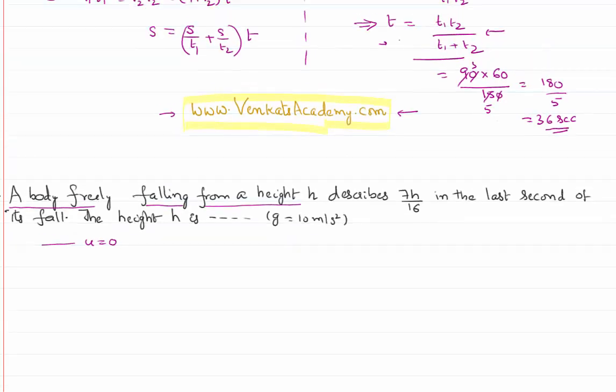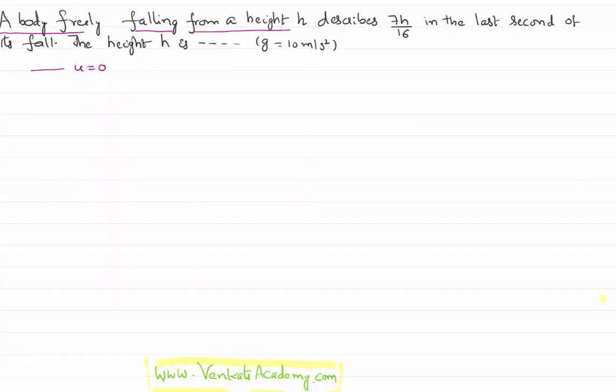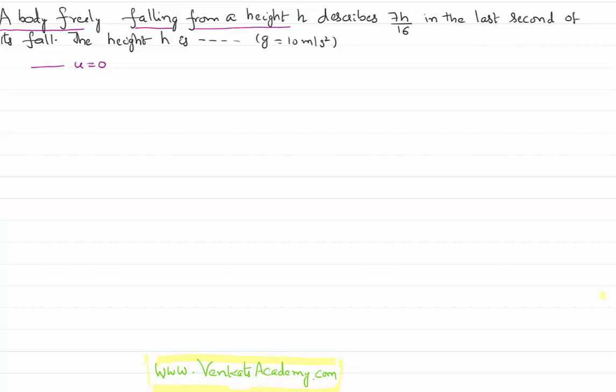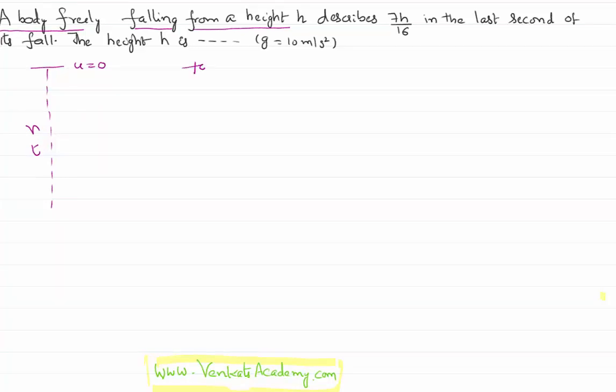It is falling from a height H. To fall that height H, it takes a time t. Then I can write a formula for the total journey. I can use the formula H = ut + (1/2)at². But ut = 0 and a = g, so H = (1/2)gt².